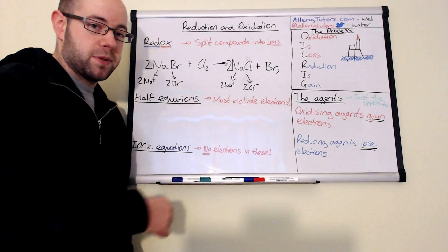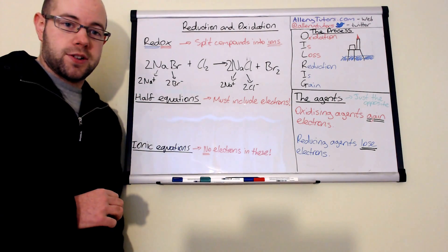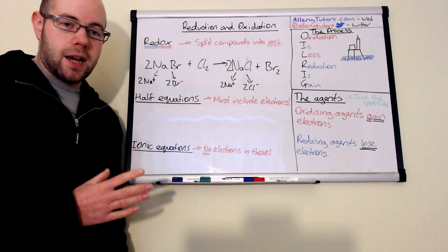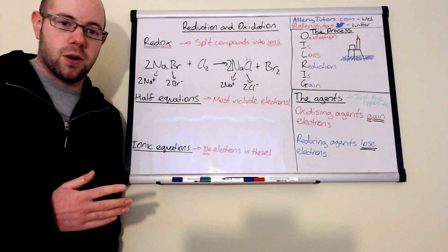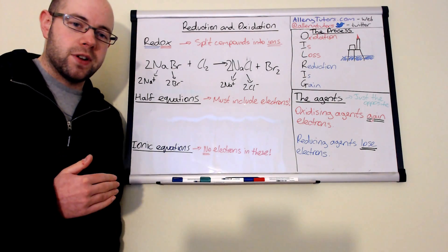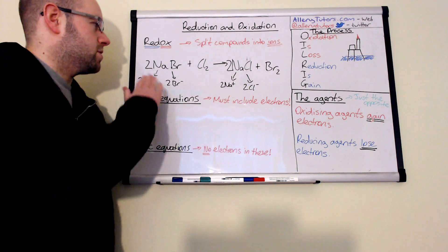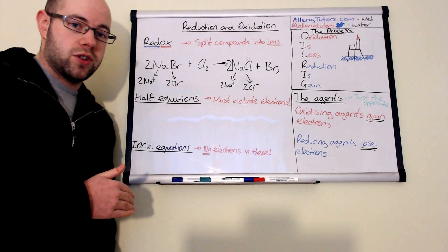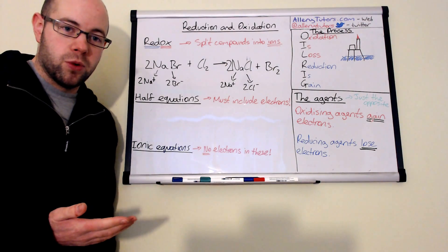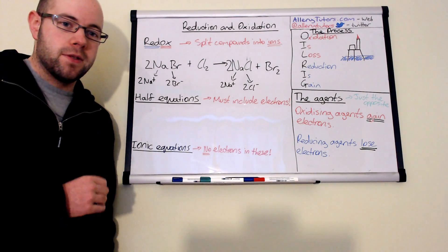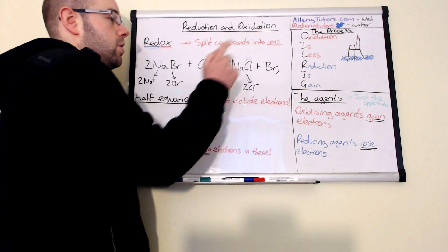I'm going to use these principles in an example to show you how to write a half ionic equation. We're going to look at this redox reaction first. A redox reaction is a chemical reaction that has reduction and oxidation happening at the same time. When faced with a redox equation, we need to come up with an ionic equation, and the first thing we do is take our compounds and split them up into ions.